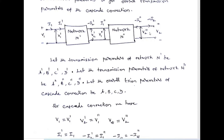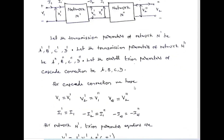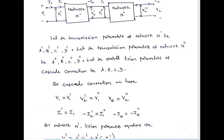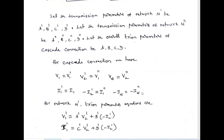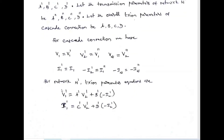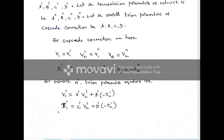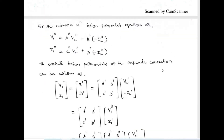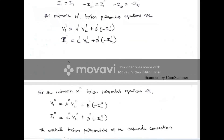The resulting output V2 equals V2''. For cascade connection: V1 = V1', V2' = V1'', V2 = V2''. Similarly for currents: I1' = I1, I1'' = minus I2', minus I2 = I2''. For network N', write the transmission parameter equation with single-dash notation; for network N'', write with double-dash notation.